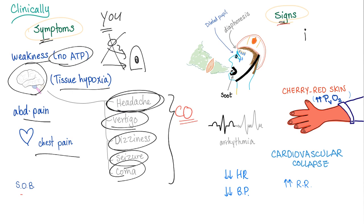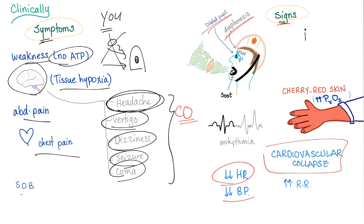Signs include: dilated pupils, diaphoresis (excessive sweating), arrhythmia, cardiovascular collapse, decreased heart rate, decreased blood pressure, increased respiratory rate, and shortness of breath.